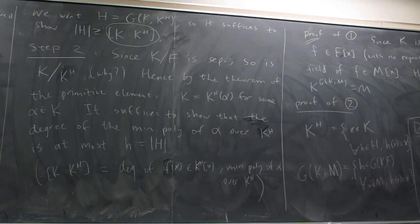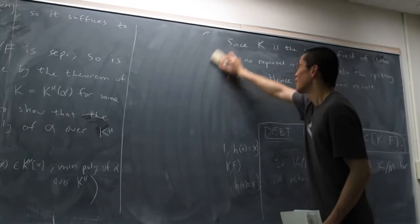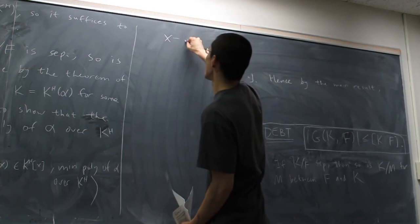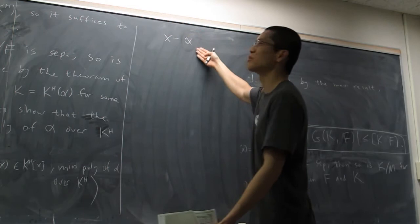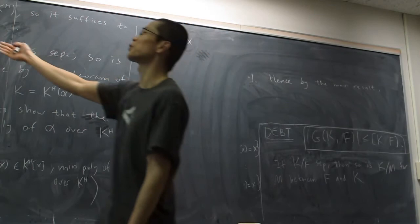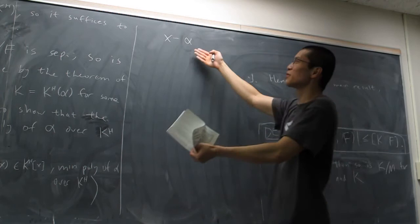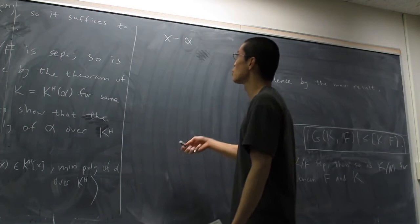The naive thing to do is say the minimal polynomial is (X - α). But that won't work because α is not in K^H in general — that's not going to be in K^H[x]. In fact, if α is in K^H, then K equals K^H and there's nothing to prove. So we have to throw in more stuff until the coefficients, when expanded, land in K^H. That happens when you have a full set of roots that exhibit all possible symmetries of this extension field.